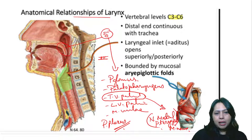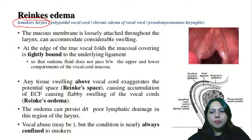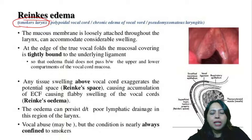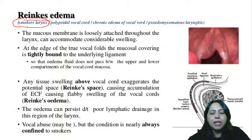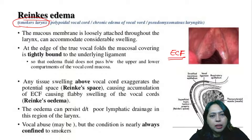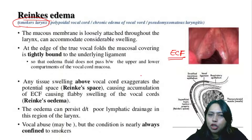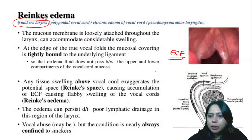Next is Reinke's edema, also called smoker's larynx. Whenever there is inflammation and swelling in the larynx, it could be because the mucous membrane has been inflamed or abused. The mucous membrane is swollen with extracellular fluid collection, and because there is so much space within, the swelling does not lead to any pain - so it is painless. The person may not even know they have this edema. It can also change the person's voice, and because of poor lymphatic drainage, the edema can persist for a longer time.